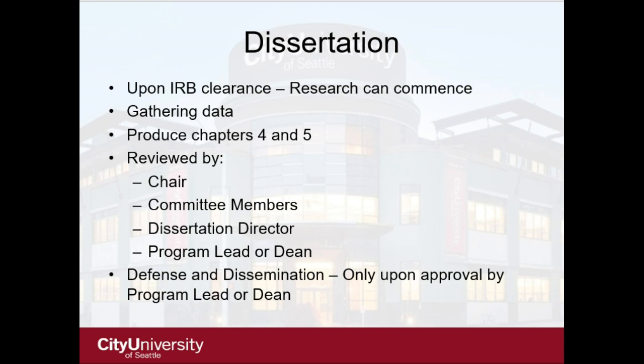Once you get IRB clearance, you can begin researching — this is the final dissertation phase. You gather your data, analyze it, and write Chapters 4 and 5. Chapter 4 is the presentation of your data: organized by themes for qualitative research, or tables with calculations and figures for quantitative. Chapter 5 combines Chapter 4 with Chapter 2 to create your discussion of findings, typically organized by your hypotheses or research questions. The final dissertation is reviewed by your chair, committee members, dissertation director, program lead, and the Dean.